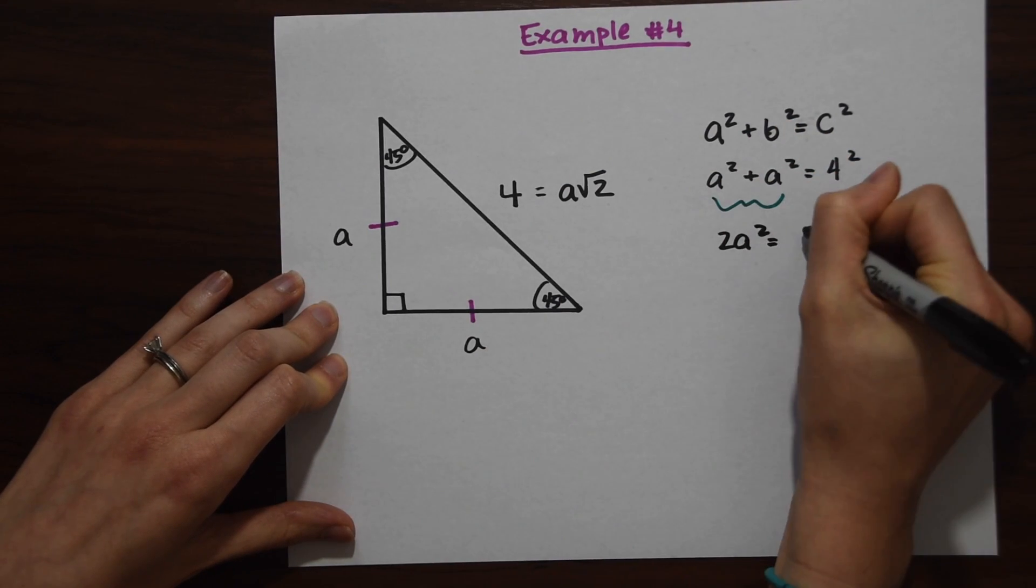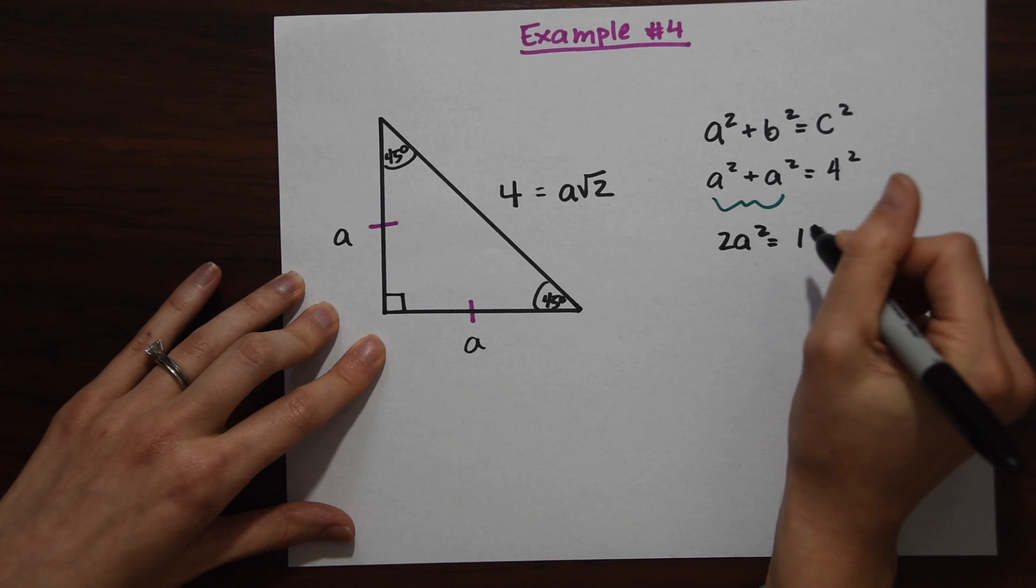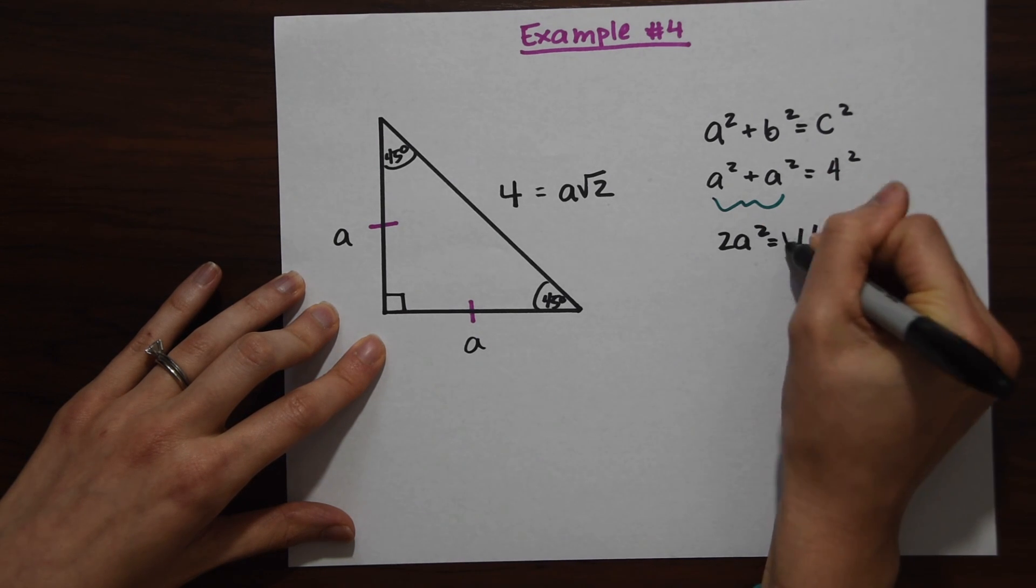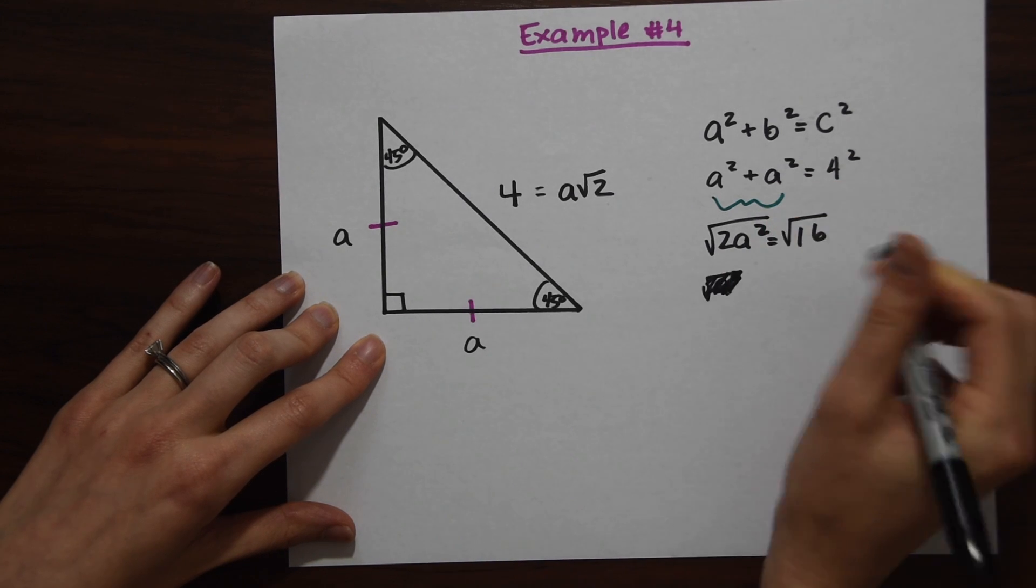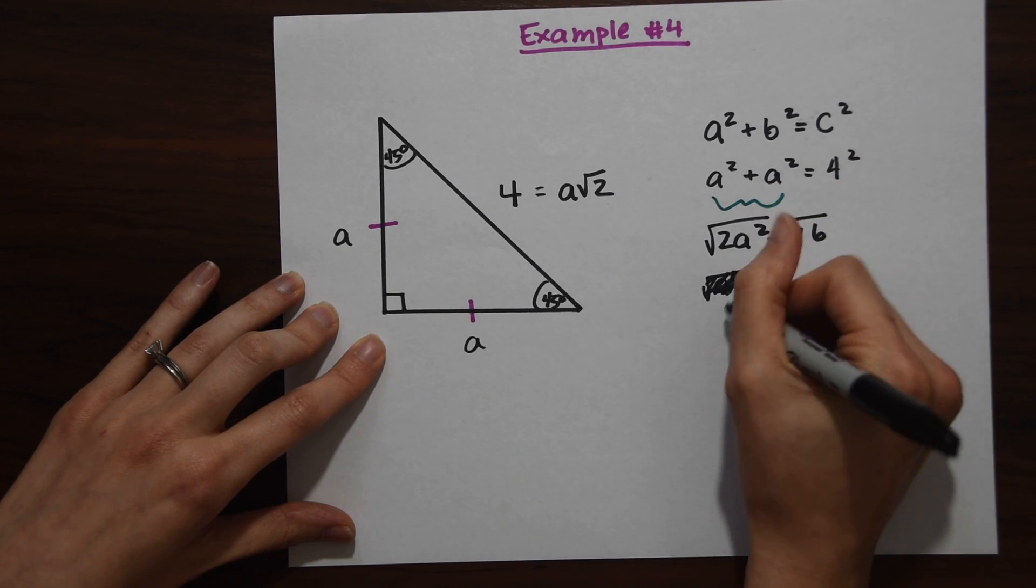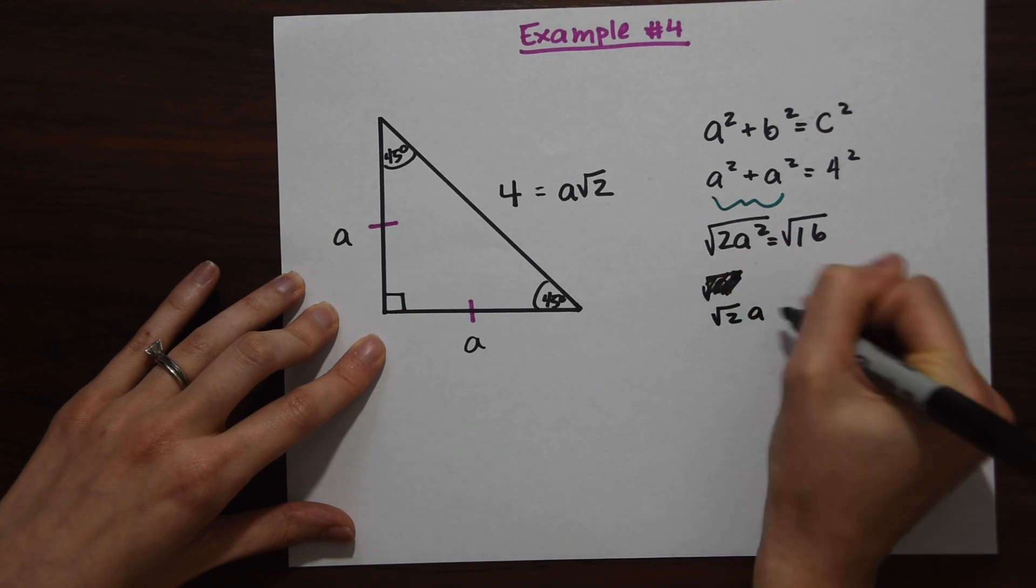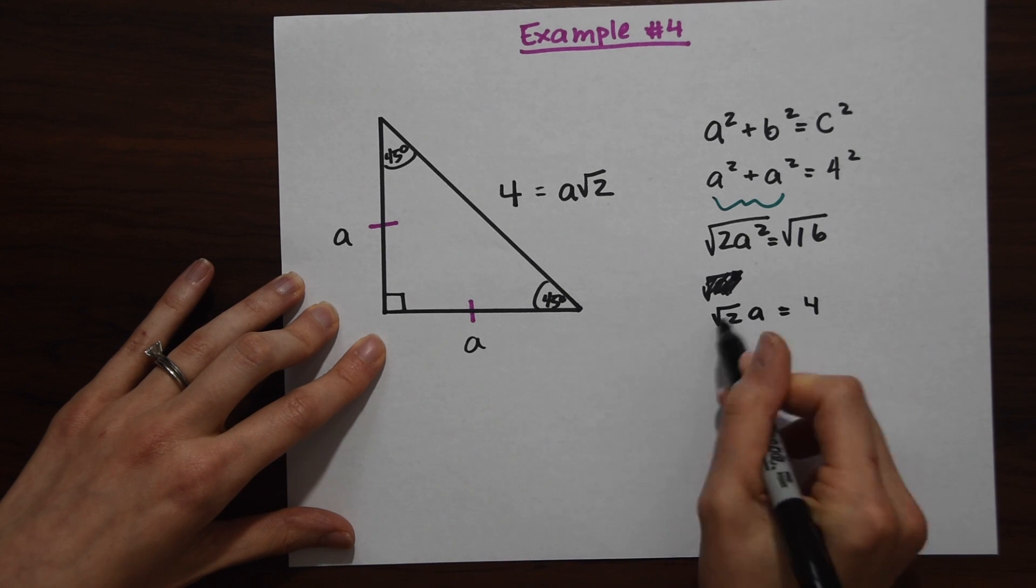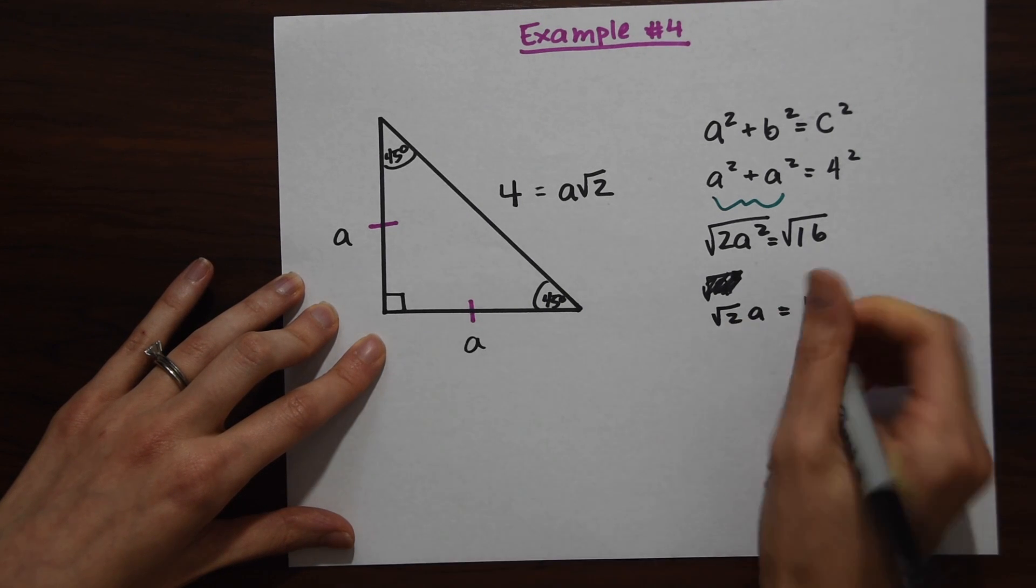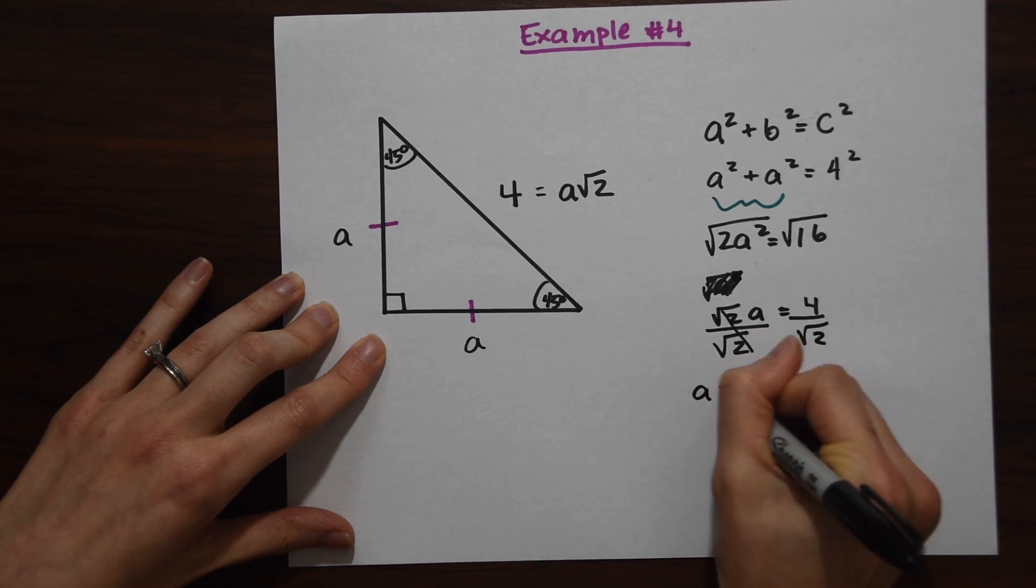Now we could just take the square root of both sides to find out what a is. Radical 16, radical 2a squared—just take the square root of both sides—and we get radical 2a equals 4. Remember, we want to get a alone because that's what we're trying to find, so we're just going to divide out that radical 2 on both sides.